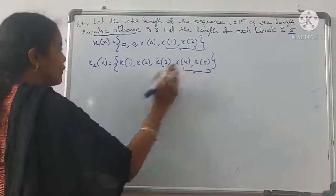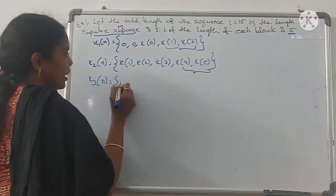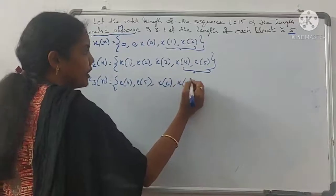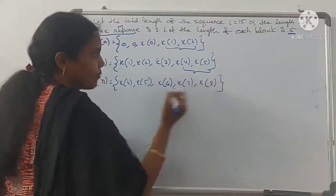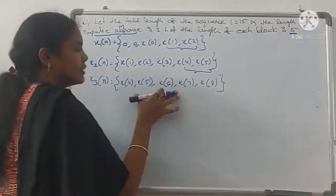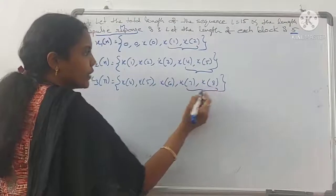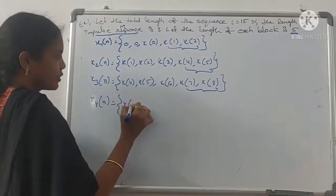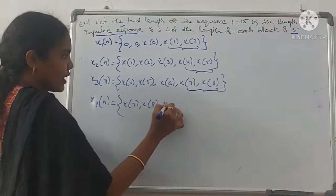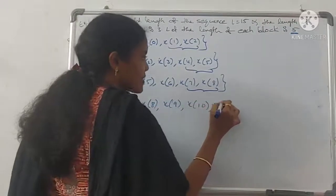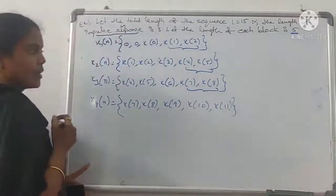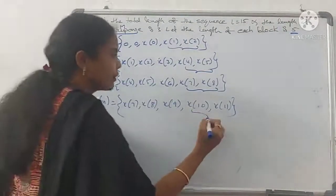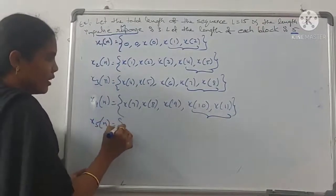For x3(n), take x(4), x(5), x(6), x(7), and x(8) — length 5. For x4(n), take the last two from x3(n), that is x(7) and x(8), then x(9), x(10), and x(11) — again length 5.